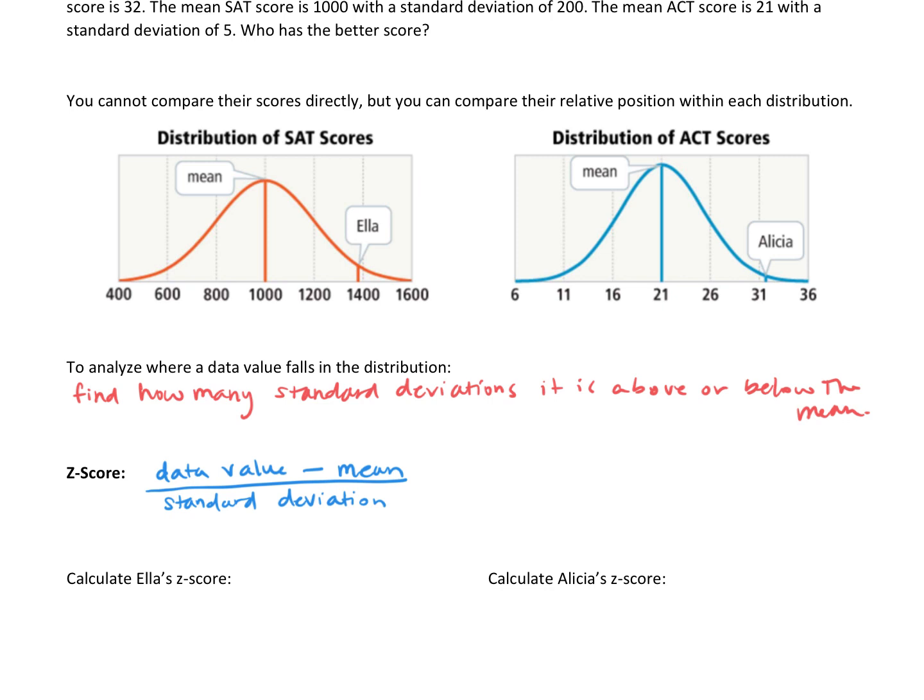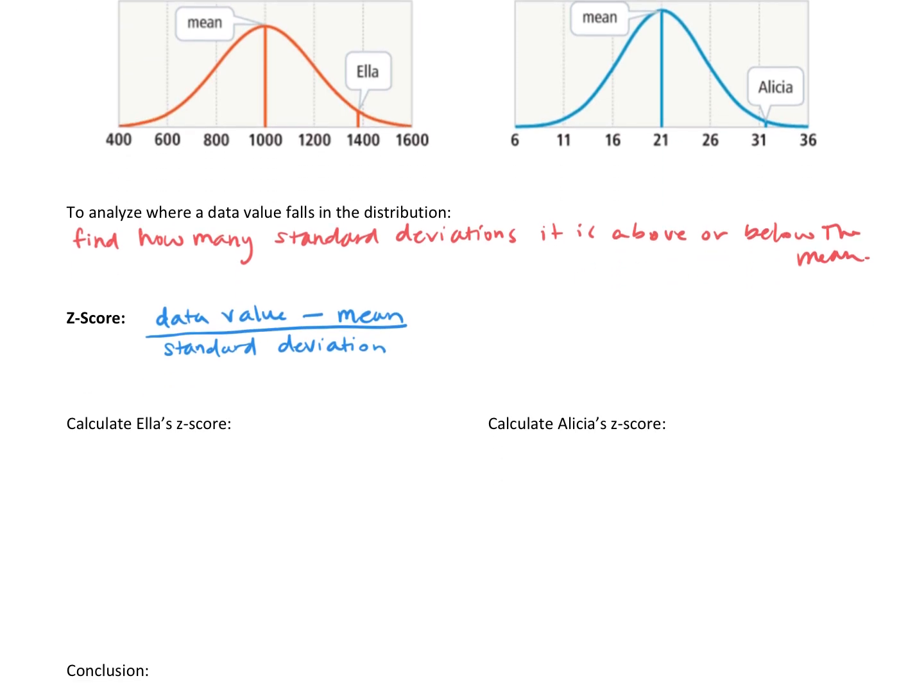Let's calculate Ella's z-score. Her SAT score was 1380. The mean SAT score is 1000, and the standard deviation is 200. So her z-score is going to be 1380 minus the mean, 1000, divided by 200. 1380 minus 1000 is 380. Divide that by 200, and you get 1.9. So Ella's z-score is 1.9.